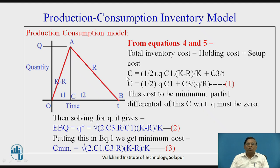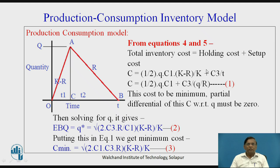This is the cost equation, wherein the first term — (1/2) q c1 up to k — corresponds to the holding cost term. The second part corresponds to the setup cost. Here, c2 is not considered because in the assumptions, the holding cost during production is assumed to be zero.